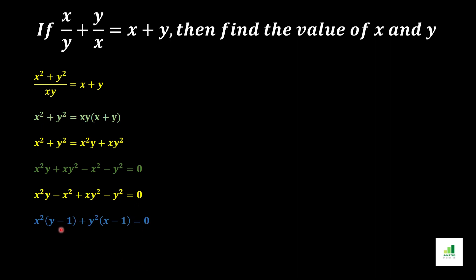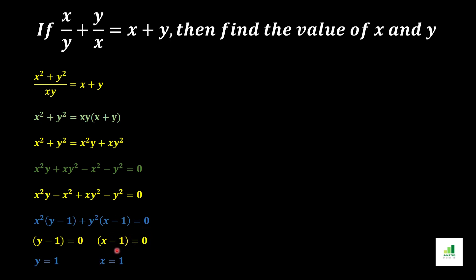We set each factor equal to zero. First, y minus 1 equals 0, so moving minus 1 to the other side gives y equals 1. Then x minus 1 equals 0, giving x equals 1. So the value of y is 1 and the value of x is 1 for this expression.